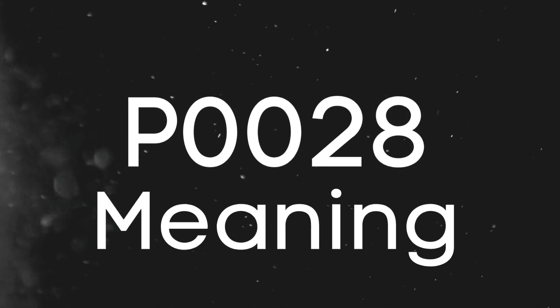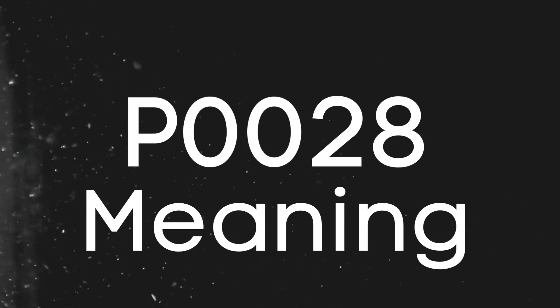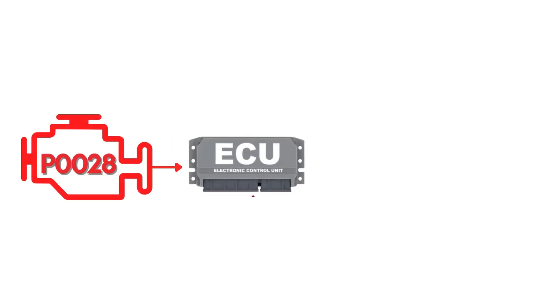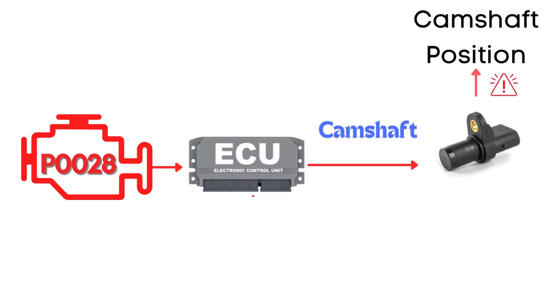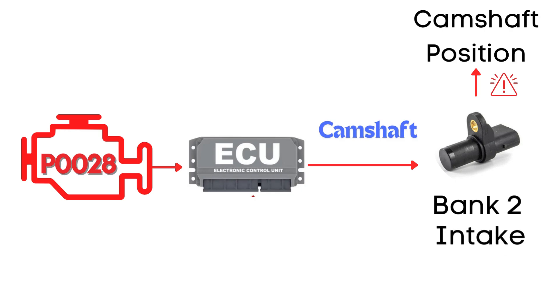First, let's understand what the P0028 code is. The P0028 code is triggered when the ECM detects that the actual camshaft position doesn't match the desired camshaft position. Specifically, this code points to an issue with the camshaft position actuator circuit for bank two, referring to the intake camshaft.